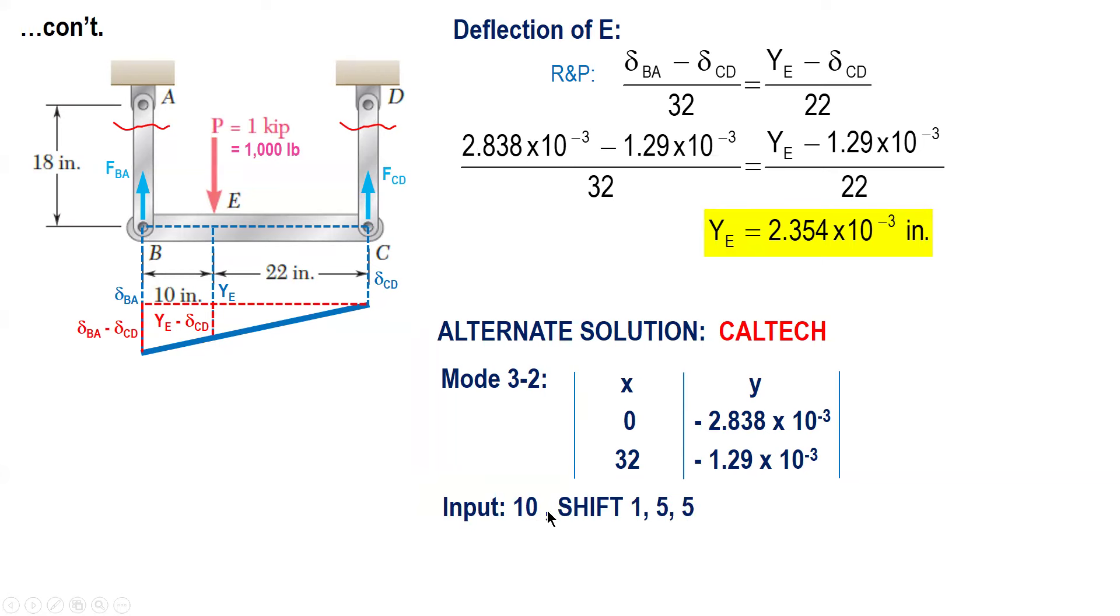And then the next input is this. You input 10, input the value of X and then you solve for Y. So input 10 and then to solve for Y, press shift and then 1 and 5, 5.